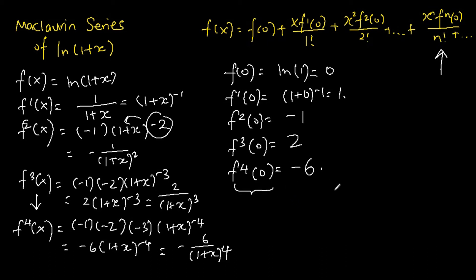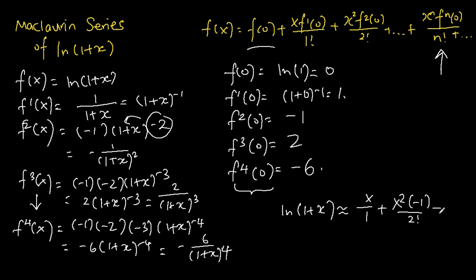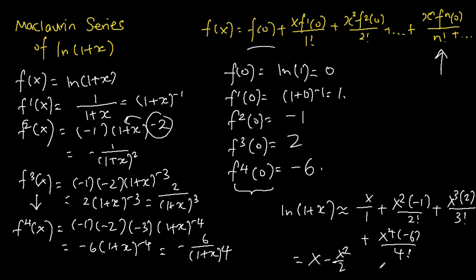Once we have all these values, we can express the function using the Maclaurin series. We have: 0 plus x times 1 over 1 factorial, plus x squared times negative 1 over 2 factorial, plus x cubed times 2 over 3 factorial, plus x to the power of 4 times negative 6 over 4 factorial. Simplifying, the final answer is x minus x squared over 2 plus x cubed over 3 minus x to the power of 4 over 4.